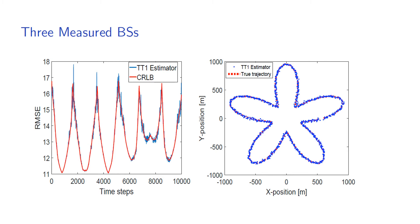As presented in the left figure, the positioning error along the trajectory varies between 11 to 18 meters using the TOF-TDOA estimator with three base stations. The Cramér-Rao lower bound (CRLB) for this scenario is also plotted to represent the achievable lower bound. In the figure to the right, a scatter plot of the estimated trajectory is shown on top of the true trajectory.